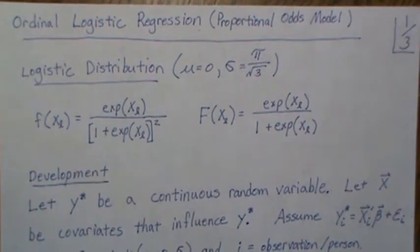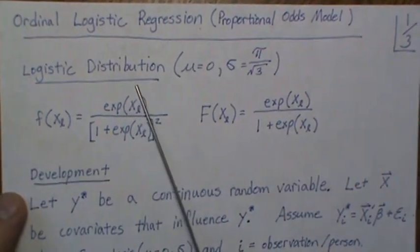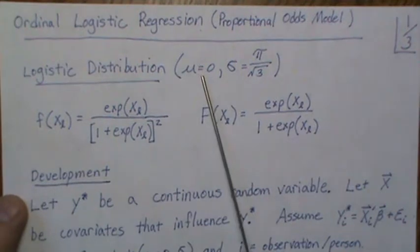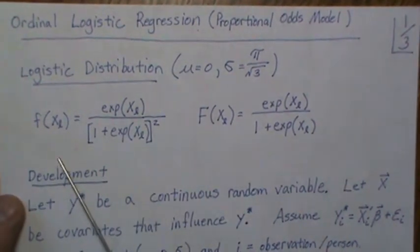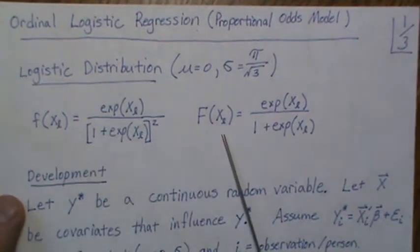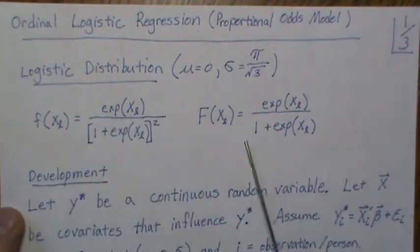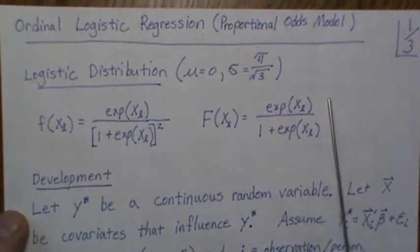As a brief reminder, what the logistic distribution looks like when the mean is zero and the standard deviation is pi over the square root of 3 is this, and the cumulative distribution function is this function here.